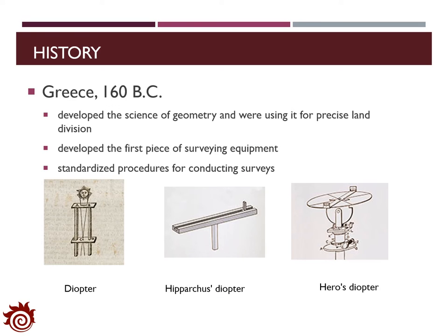Later on, around 160 BC, Greece developed the science of geometry and used it to precisely measure land divisions. They invented the first piece of surveying equipment, the Diopter. The most famous ones are Hipparchus's Diopter and Hero's Diopter, which are shown in the figures. In addition, they also developed standardized procedures for conducting surveys so that people could easily follow the procedure to measure lengths.